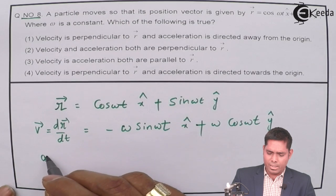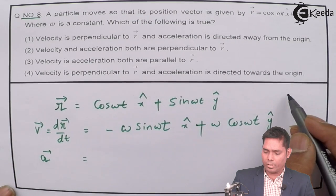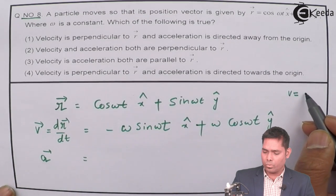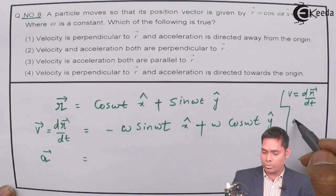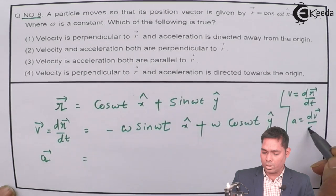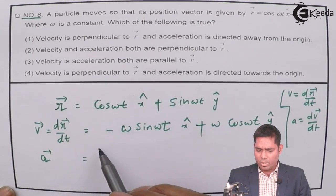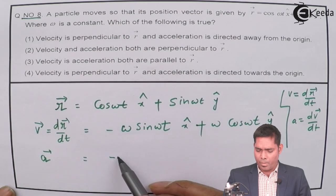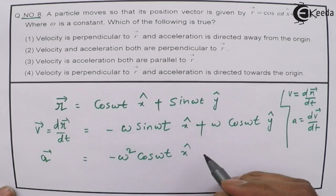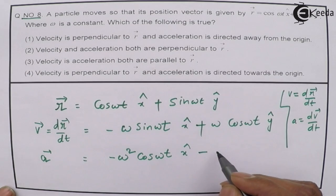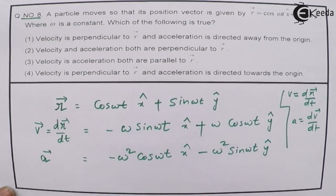Now, if I find acceleration: since v = dr/dt and a = dv/dt, the acceleration is the derivative of the velocity equation. So this differentiation gives me minus omega-squared cos(ωt) x-cap minus omega-squared sin(ωt) y-cap. So this is the acceleration equation.